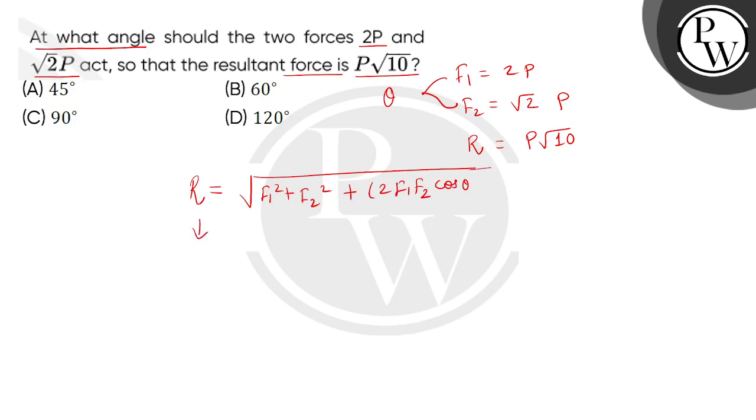So putting the values, resultant force is P square root of 10, this is equal to square root of 2P square plus within bracket square root 2P whole square plus within bracket 2 multiplied 2P multiplied square root 2P multiplied by cos theta.